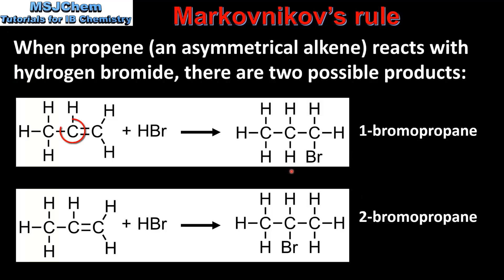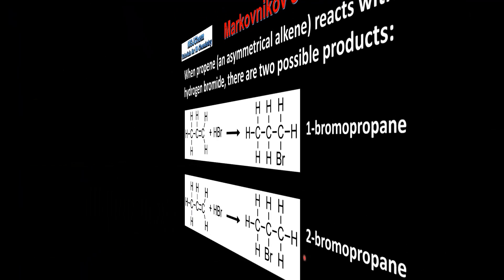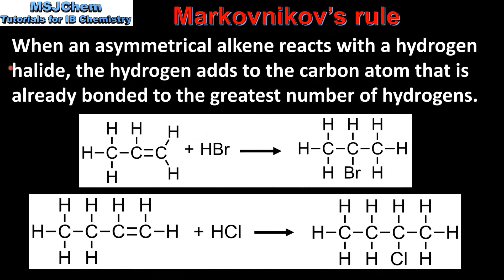In 1-bromopropane the hydrogen of the hydrogen bromide has bonded to carbon number 2 in propene. In 2-bromopropane the hydrogen of the hydrogen bromide has bonded to carbon number 1. Markovnikov's rule states that when an asymmetrical alkene reacts with a hydrogen halide, the hydrogen adds to the carbon atom that is already bonded to the greatest number of hydrogens.